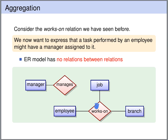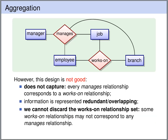For what we've seen so far, our only possibility would be to make the manager's relationship set also a ternary relationship set. However, this is not a good choice for several reasons. This is not a good design because it does not capture that every manager's relationship belongs to precisely one works-on relationship. Also, using this design we introduce a lot of redundancy. We cannot discard the works-on relationship set because we may have works-on relationships that are not supervised by any manager.